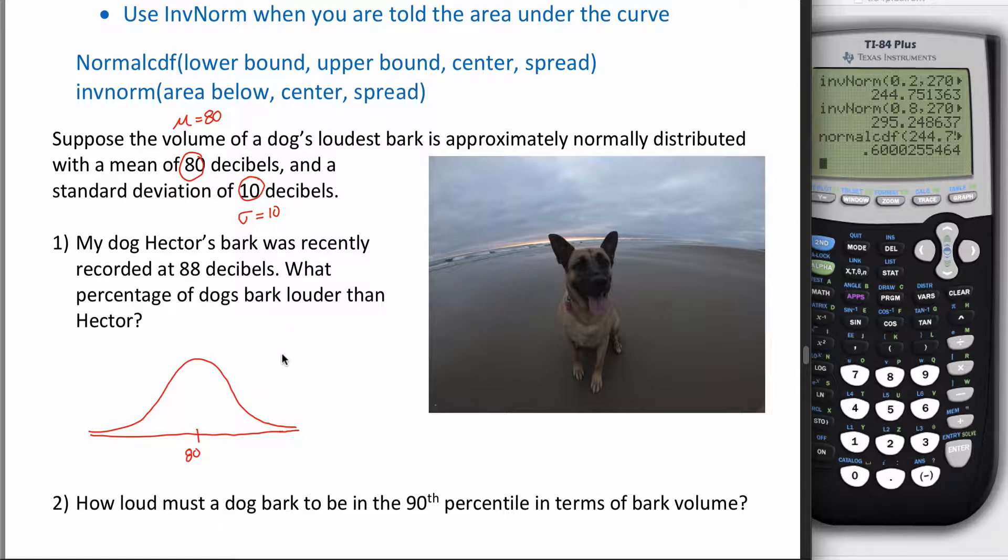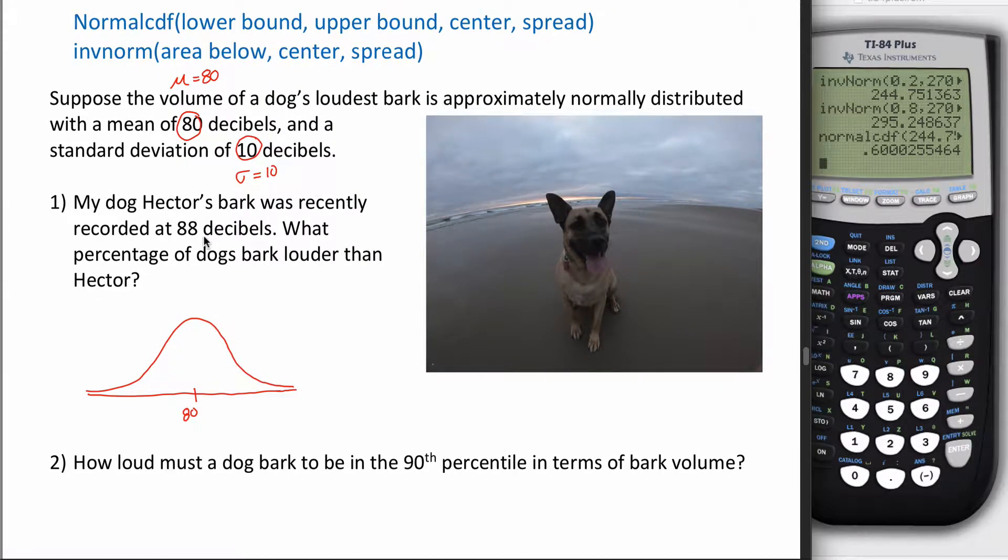However, as you get more sophisticated, you stop counting up and down by tens because if it's an inverse norm question, you don't know what the answer is, so you can't draw the picture until you know the answer. For this first one, my dog Hector's bark was recently recorded at 88 decibels. What percentage of dogs bark louder than Hector? Is this normalCDF or inverse norm? Are they asking me for an area or telling me an area?